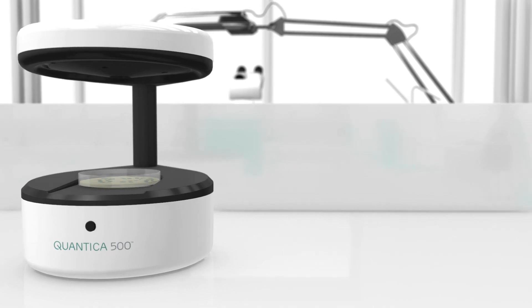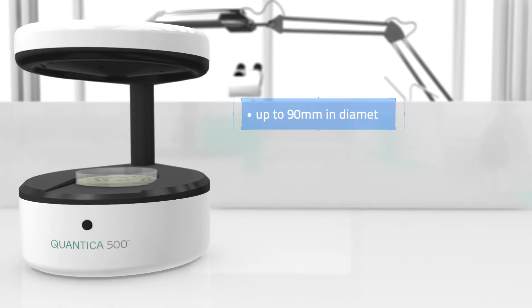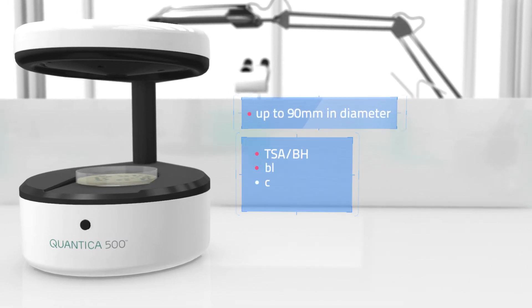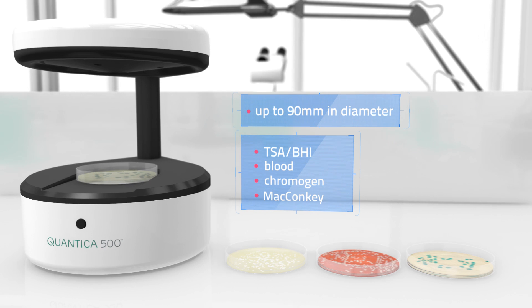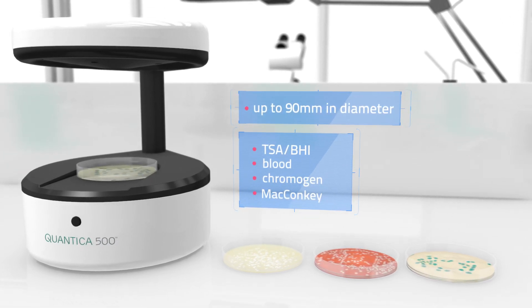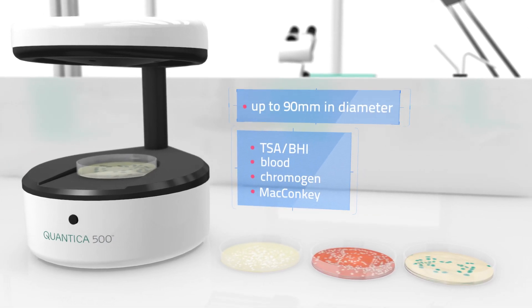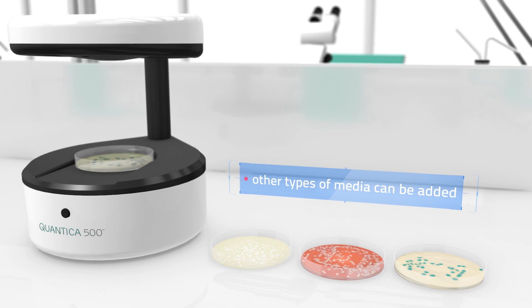Quantica 500 can be used with such types of plates as standard — that is, TSA, VHI, Blood, Chromagen and McConkie. Other types of media can also be added.